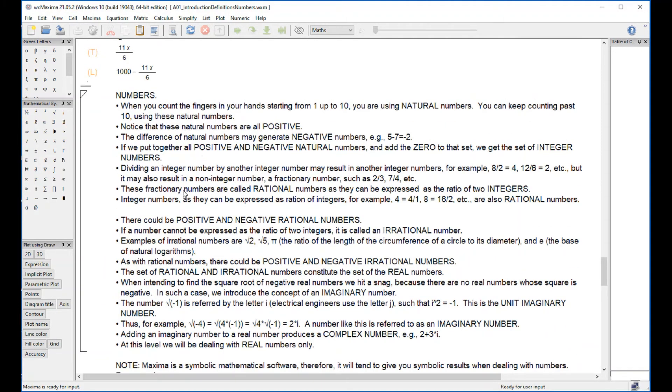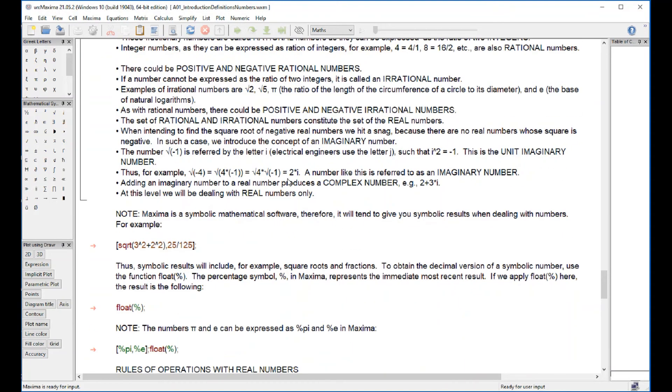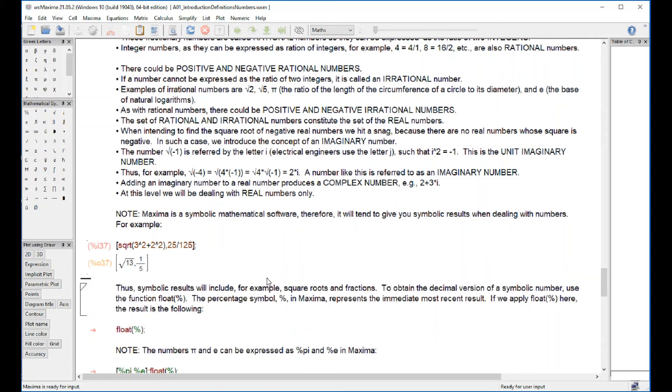The next section talks about numbers. Again, you probably already know what a positive number is, a negative number, rational numbers, irrational numbers. If you don't, you can pause this video and read this, or if you have the document that you download with this video you can read it from there using Maxima. Maxima as a symbolic software is going to tend to give you results like this: √13, and the simplification of 25/125 is 1/5. If you want to see the equivalent decimal numbers, use float and then use the percentage number. The percentage number in any Maxima command means the most immediate result.